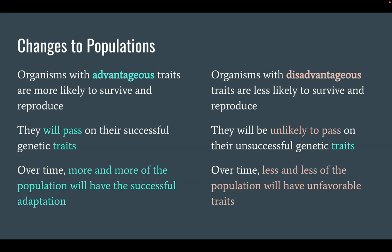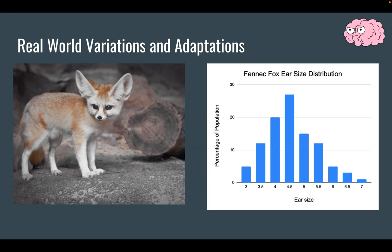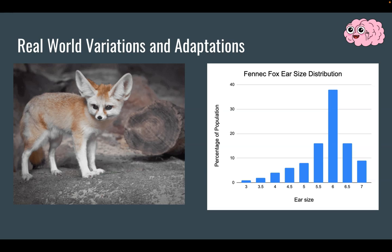Let's go back to our examples. For the fennec fox, it's helpful to have large ears to help hunt and to cool down. The graph on the right shows the average ear size of fennec foxes from a million years ago. Larger ears are helpful, and so over time, the fennec foxes with larger ears reproduced and passed on the trait for larger ears. Today, the average fennec fox has larger ears than the average fennec fox from a long time ago. The population changed.